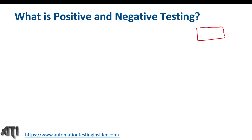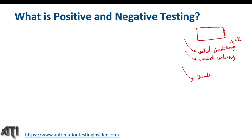When we test an application with valid conditions and valid values, that is positive testing. When we test with invalid conditions and invalid values, that is negative testing. I'll explain what valid and invalid conditions and values mean through examples.